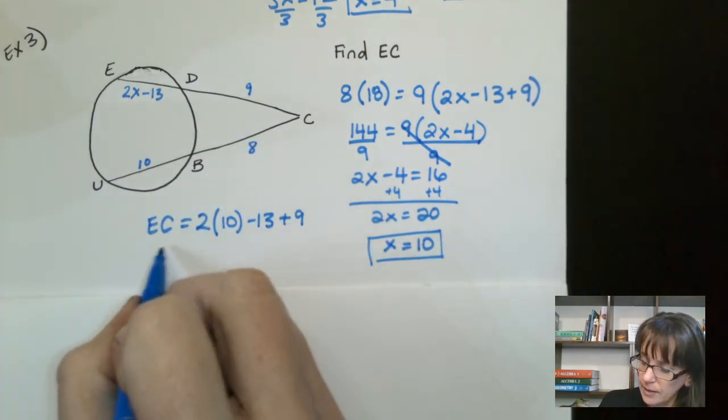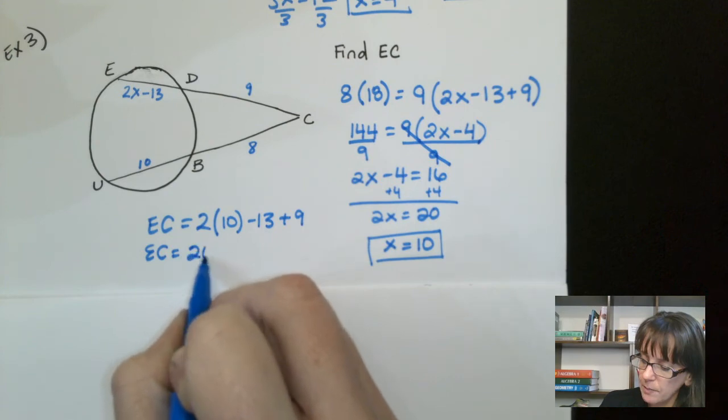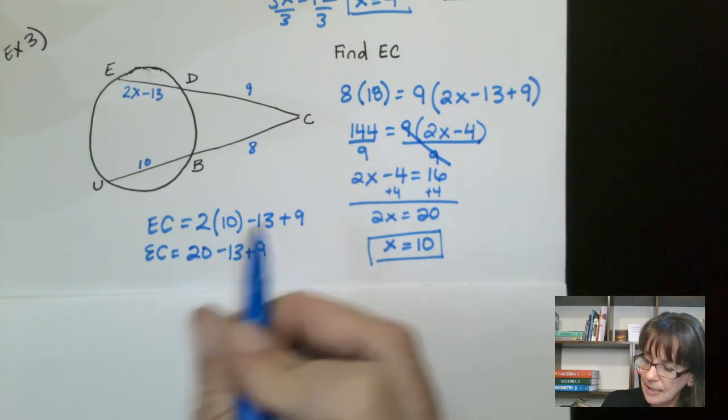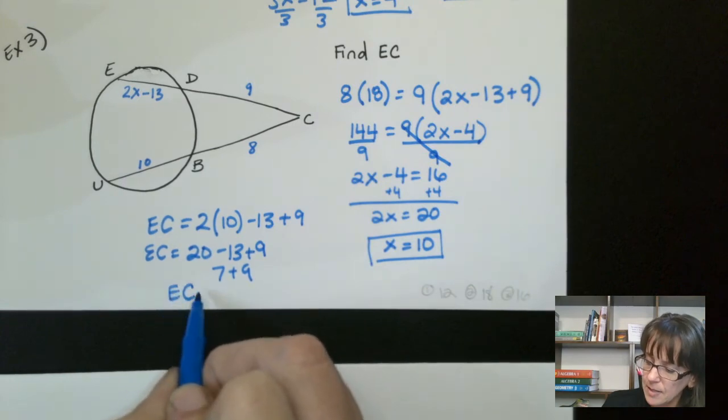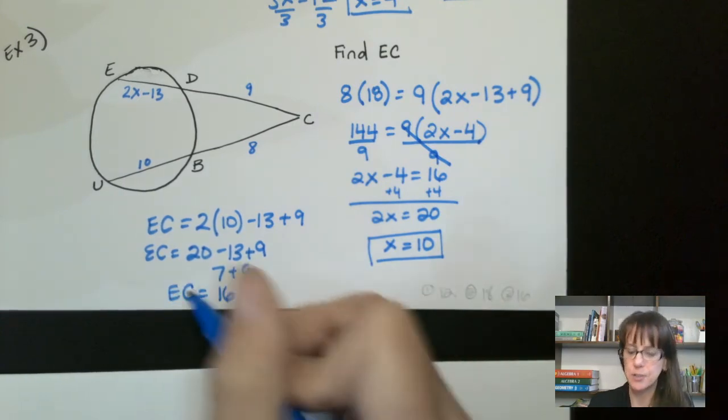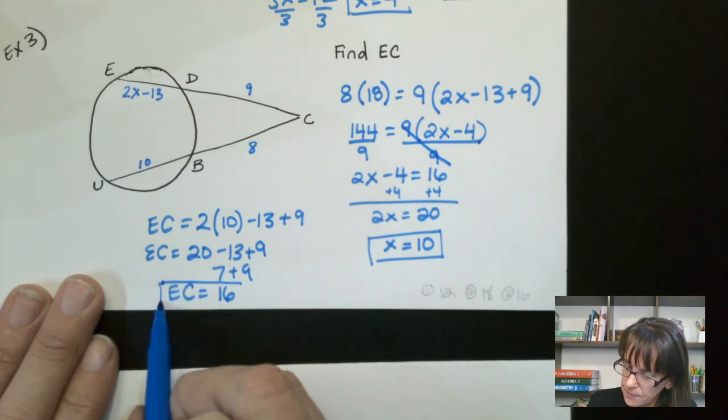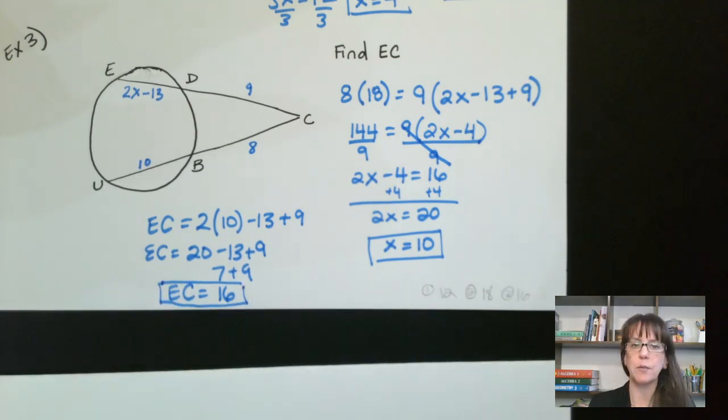So I get EC equals 20 minus 13 plus 9. So that gives me 7 plus 9, which gives me EC equals 16. So my correct answers are 16 right there.